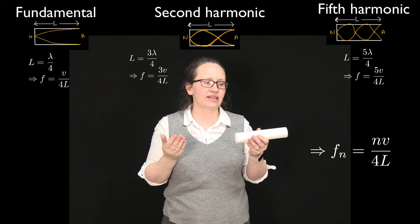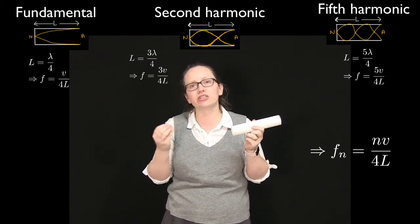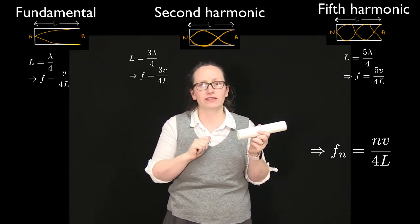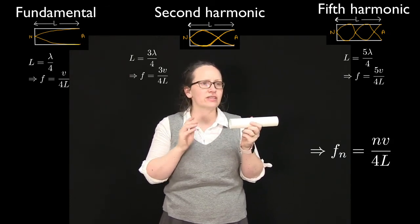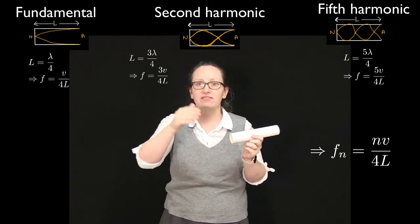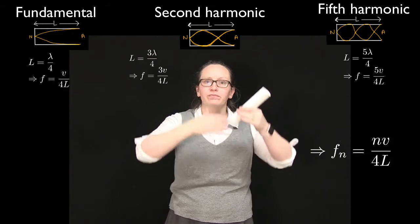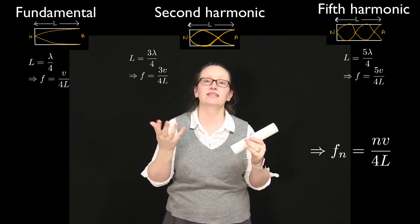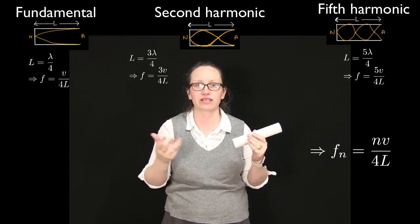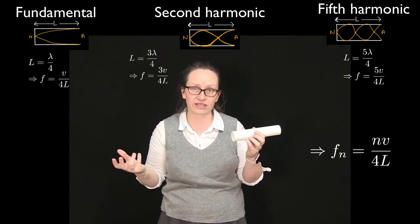As with standing waves on strings, the harmonic frequencies are all integer multiples of the fundamental frequency. So this is why we call our harmonics the first, third, fifth, seventh, ninth, etc., so that we can have the ninth harmonic having a frequency which is nine times that fundamental frequency.